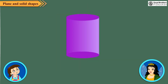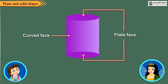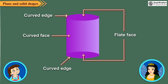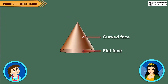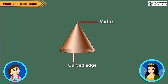Now take a look at this shape. It is like a can or drum. It is called a cylinder. It has three faces — two flat and one curved. It has two curved edges and no vertex at all. This next shape has two faces — one flat and one curved. It also has one vertex and one edge. It is a cone.